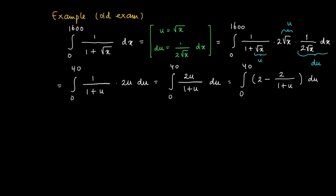And having this expression, it's easy to come up with the primitive. So the primitive of 2 equals 2u. And the primitive of minus 2 divided by 1 plus u equals minus 2 times the log of 1 plus u.